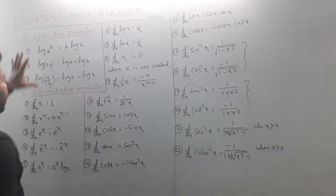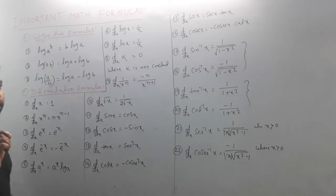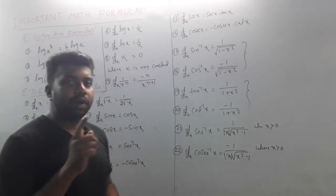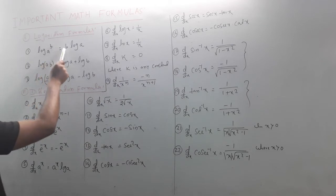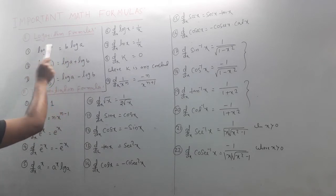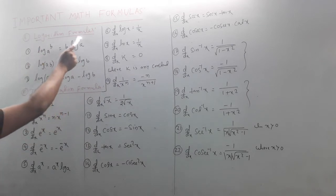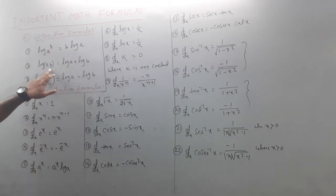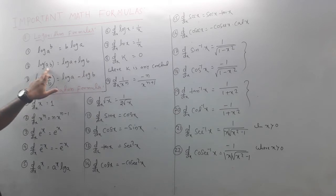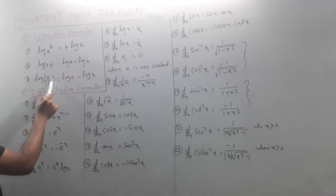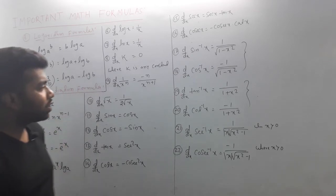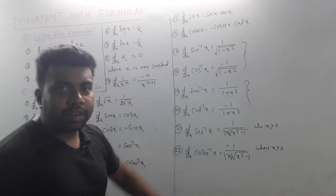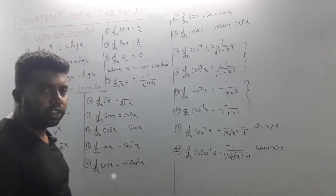Next, the logarithm formula. log(aᵇ) = b·log(a). log(ab) = log(a) + log(b). log(a/b) = log(a) - log(b). Next we move to the differentiation formulas — the complete set.